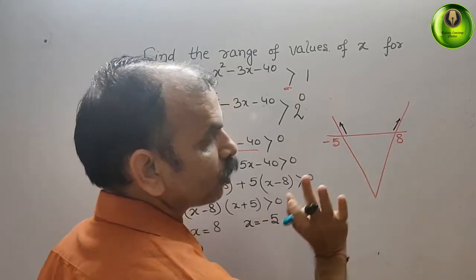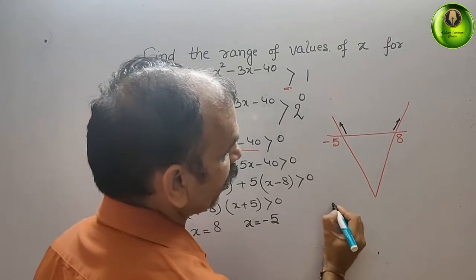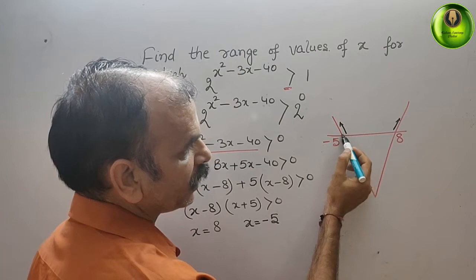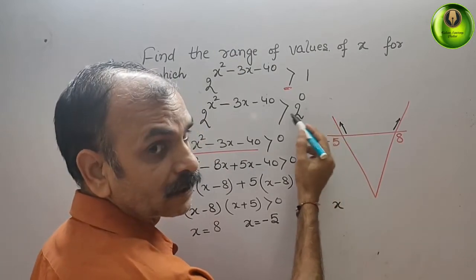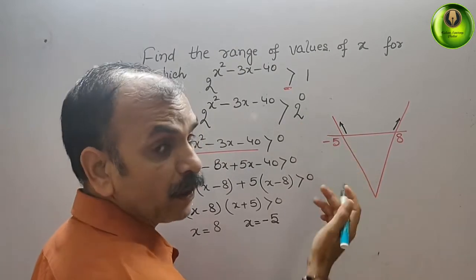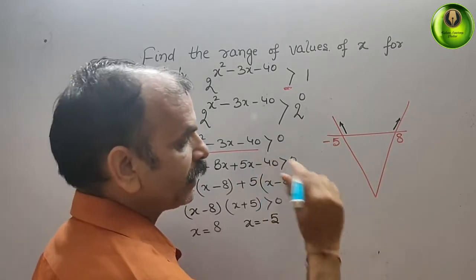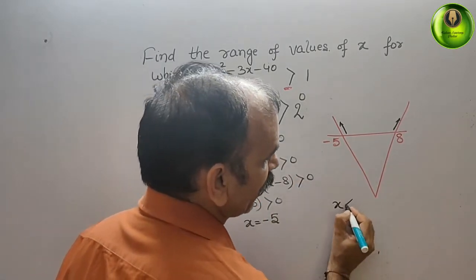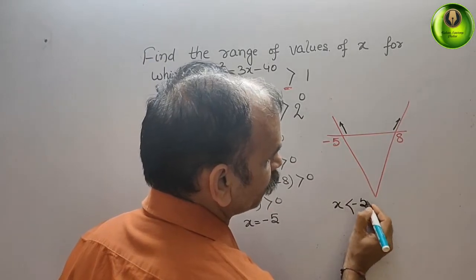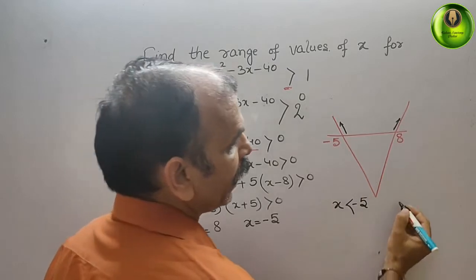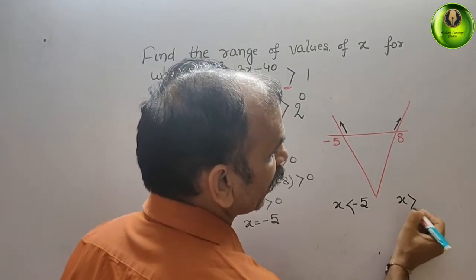Now, the two solutions are what? x should be, if you are moving like this, that means 5 is here and you are moving like this. That means you are moving towards minus 6, minus 7, minus 8. That means x is less than minus 5, and here it is what? x should be greater than 8.